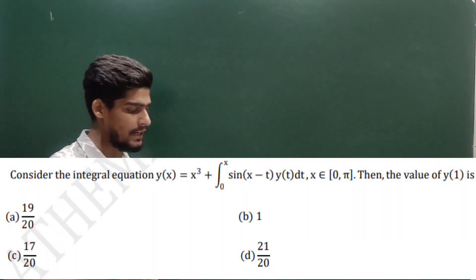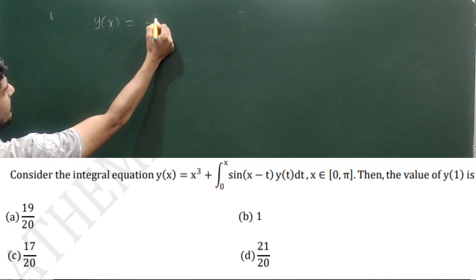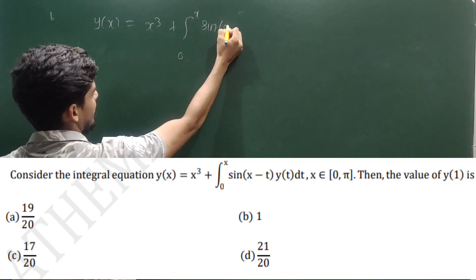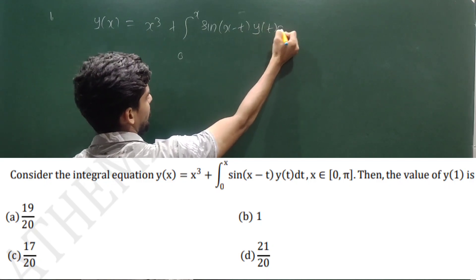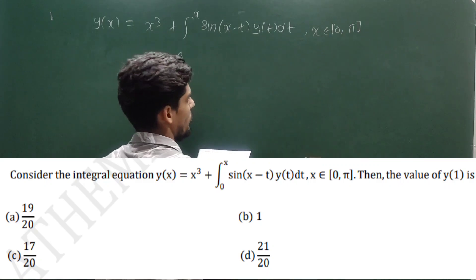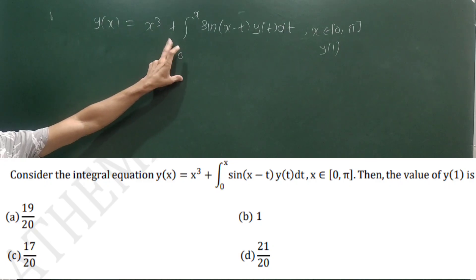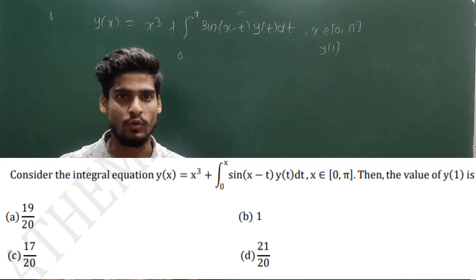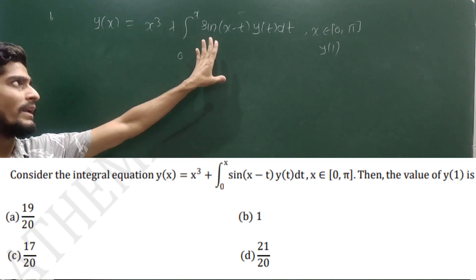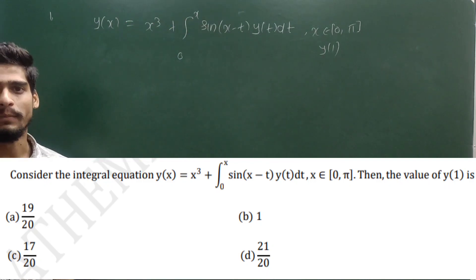Question number one: consider the integral equation y(x) = x³ + ∫₀ˣ sin(x − t) · y(t) dt, where x lies in [0, 5]. Find the value of y at point one. This is a Volterra integral equation with a convolution-type kernel. There are many methods to solve this — resolvent kernel method, Laplace transform, or you can convert this equation into an ordinary differential equation, which is the easiest method.